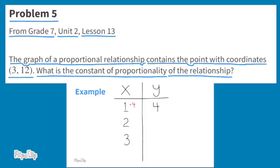Multiply 1 times 4 to get 4, 2 times 4 to get 8, and 3 times 4 to get 12. The constant of proportionality is 4.